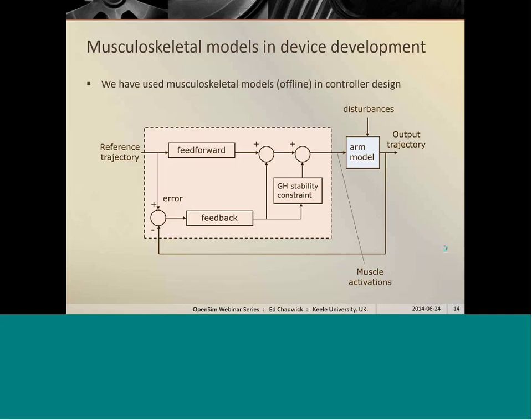So this is a controller that would be used in an FES system. We give the controller our desired trajectory, a reference trajectory. The feedforward part of the controller here calculates the desired muscle activations. We can then use a model to assess the effect of that controller, the performance of that controller on achieving the arm trajectories that we're actually looking for. So we've got muscle activations going into this arm model and a trajectory coming out. So you can see from that, that's a forward dynamic model here.